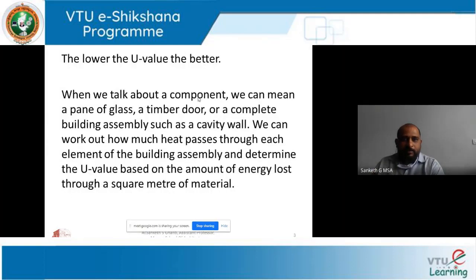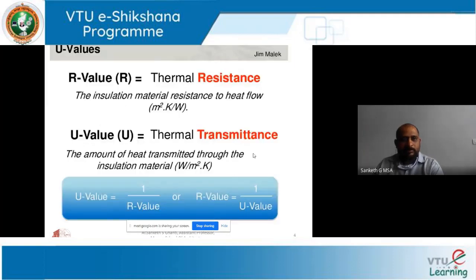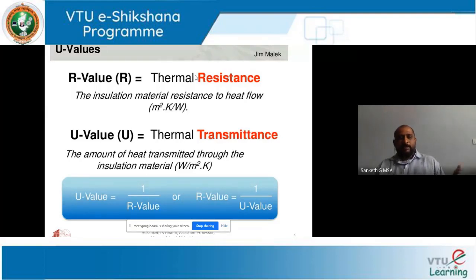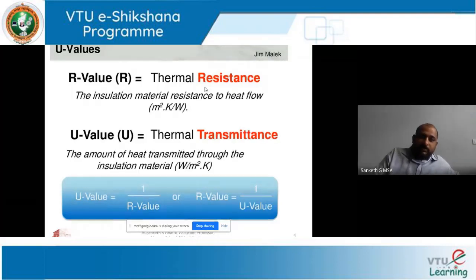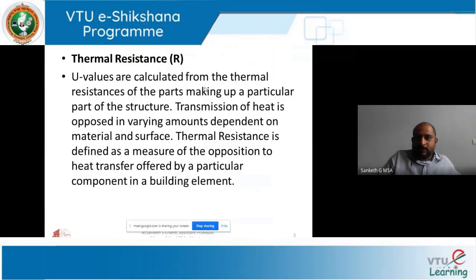The lower the U-value, the better. When we talk about the component, we can mean a pane, glass, or doorway. R-value is the opposite of U-value. U-value is thermal transmittance — the heat that is passing through. R-value is nothing but resistance; it is stopping the heat. In equation form, U-value is equal to 1 divided by R-value. Please note this down. R-value is thermal resistance and U-value is thermal transmittance.